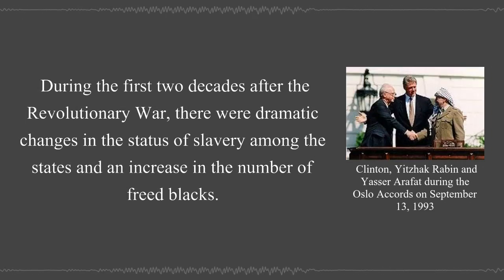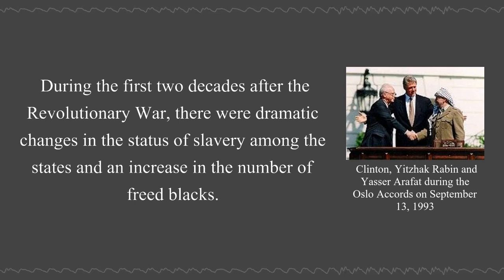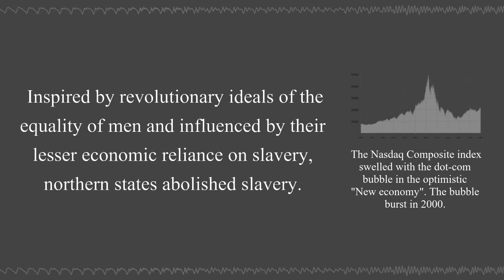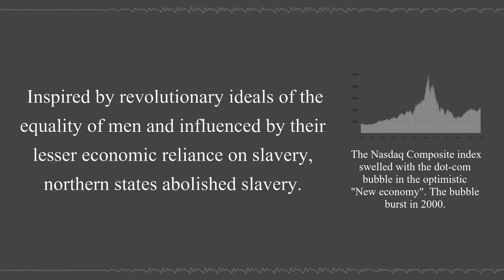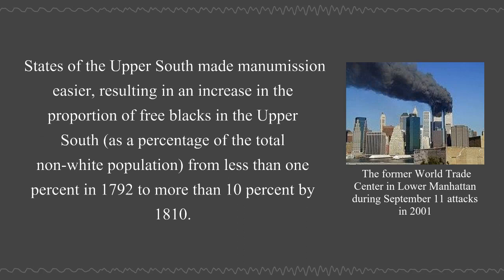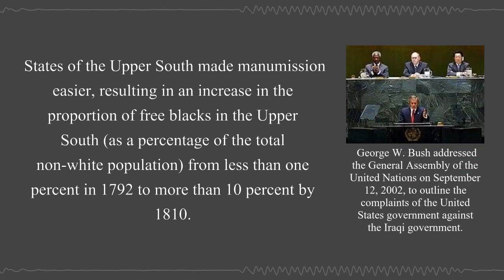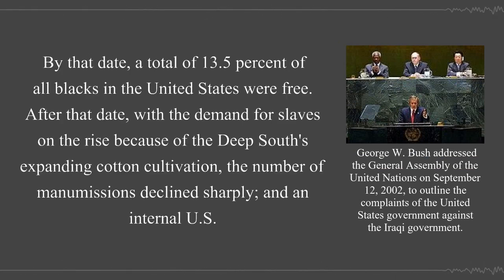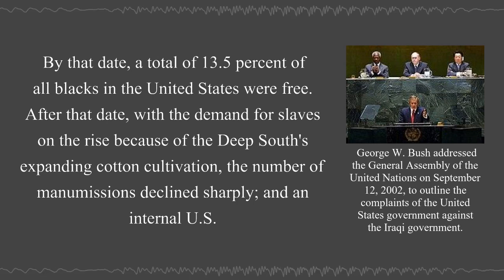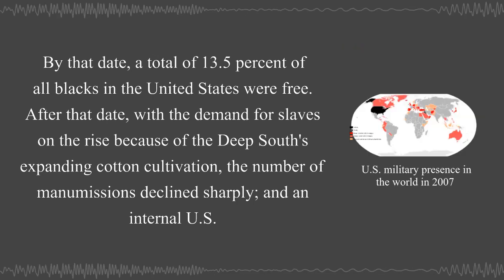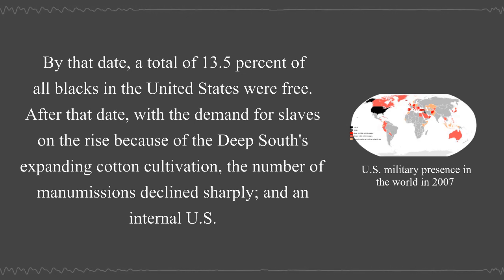During the first two decades after the Revolutionary War, there were dramatic changes in the status of slavery among the states and an increase in the number of freed blacks. Inspired by revolutionary ideals of the equality of men and influenced by their lesser economic reliance on slavery, northern states abolished slavery. States of the upper south made manumission easier, resulting in an increase in the proportion of free blacks in the upper south from less than one percent in 1792 to more than 10 percent by 1810. By that date, a total of 13.5 percent of all blacks in the United States were free. After that date, with the demand for slaves on the rise because of the deep south's expanding cotton cultivation, the number of manumissions declined sharply.